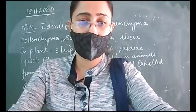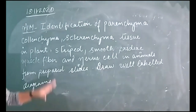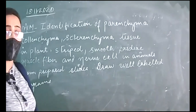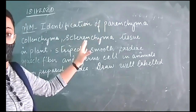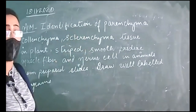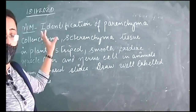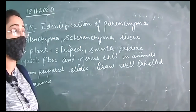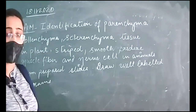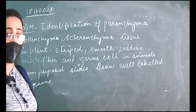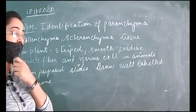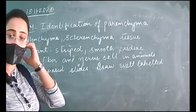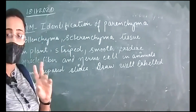The practical covers identification of parenchyma, colenchyma, and sclerenchyma tissue in plants. These are the three types of simple permanent tissues. Parenchyma, colenchyma, and sclerenchyma — sclerenchyma is the dead one, colenchyma has thickening at the corners, and sclerenchyma has lignin. In the lab manual, you have to write the aim, materials required, and procedure.